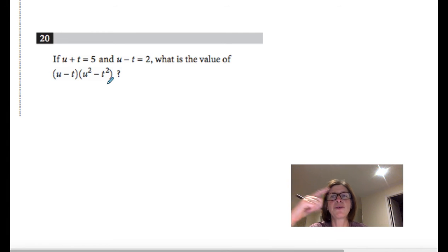Well, if you think really hard for a second, u minus t equaling 2, well, u minus t is right here, so that's actually the number 2. And u plus t and u minus t need to stand out to me. They really do.